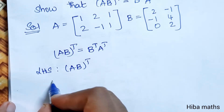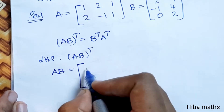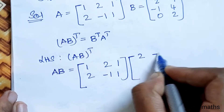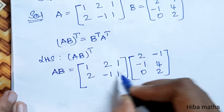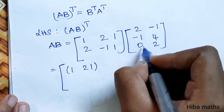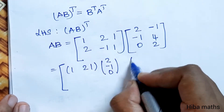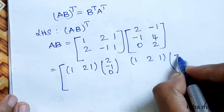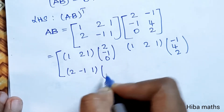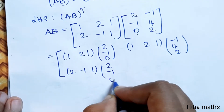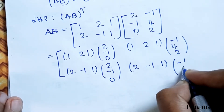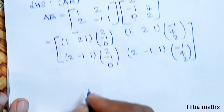For the LHS, A into B then transpose. A into B: matrix A is [1 2 1; 2 -1 1] multiplied by matrix B [2 -1 -1; 4 0 2]. First row first column: 1, 2, 1 with column 2, -1, 0. First row second column: 1, 2, 1 with column -1, 4, 2. Second row first column: 2, -1, 1 with column 2, -1, 0. Second row second column: 2, -1, 1 with column -1, 4, 2.